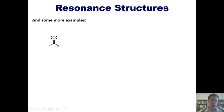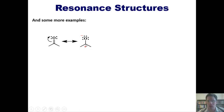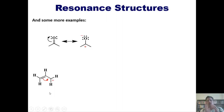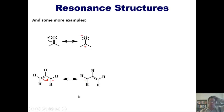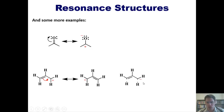Here are more examples. For acetone, if I take the pi electrons and swing them up onto the oxygen, those pi electrons become lone pairs, the oxygen gets a formal negative one charge, and the carbon — which had a full octet — now has a positive charge. In another example, a carbon with a formal positive one charge lacks a full octet. Those electrons can swing like a door on a hinge to form a carbon-carbon double bond, at which point the left carbon gets a positive charge. These are resonance contributors of the same molecule.